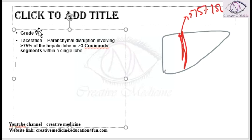In Grade 5, there is also vascular injury. If there is injury to the juxtahepatic venous structures, such as the retrohepatic vena cava, that constitutes a Grade 5 vascular injury.